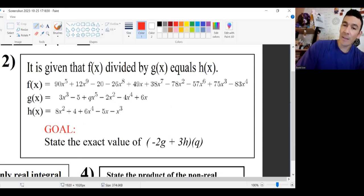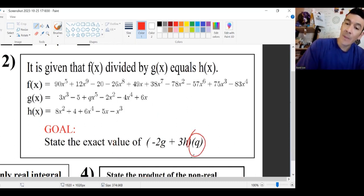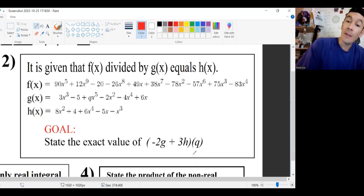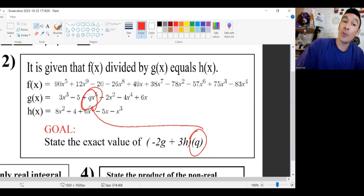For number two on this document here, the goal is down here. So notice that in order to achieve this goal, you have to first know the value of little q. Little q is the number right there. You see that? That's little q.